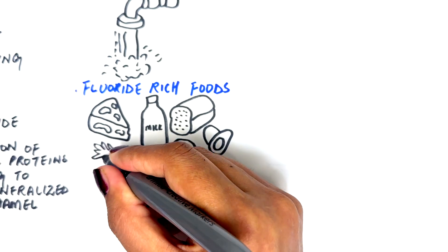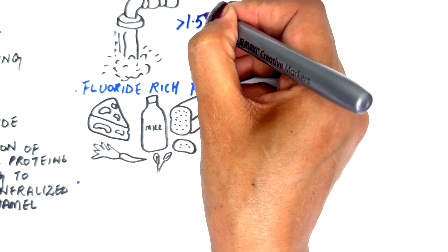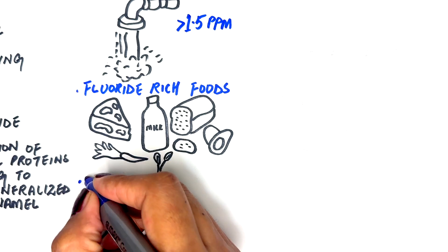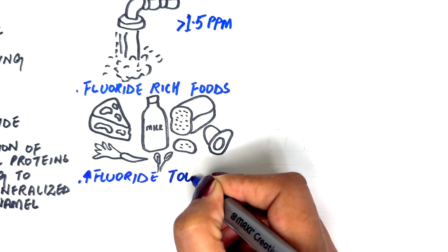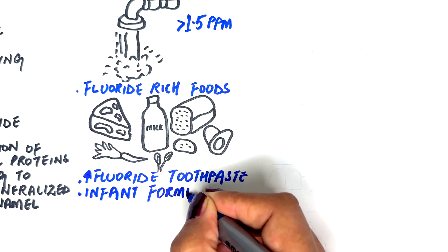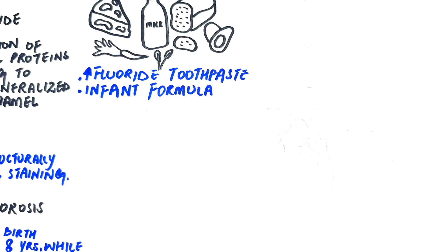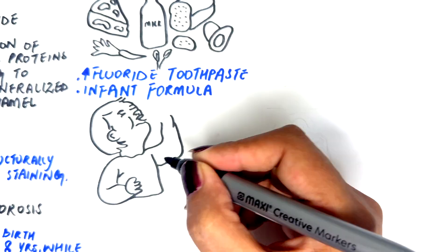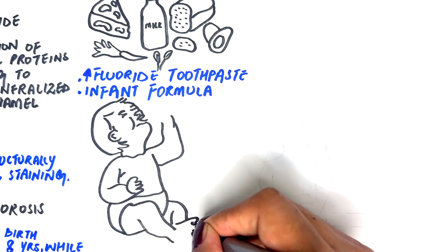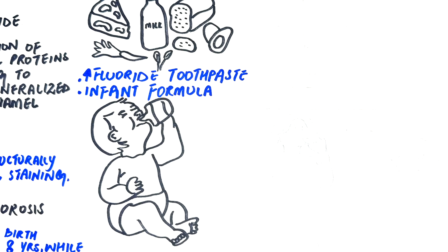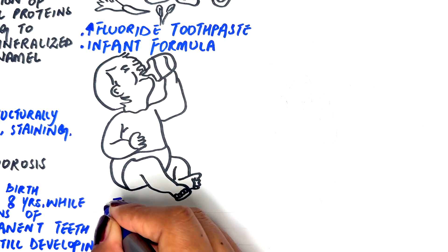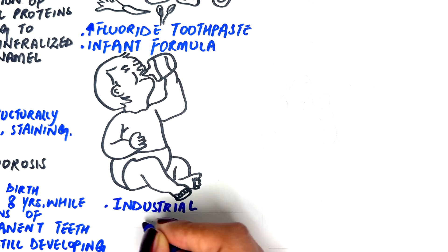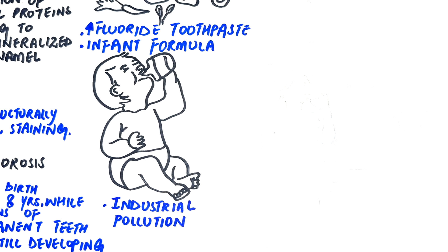Other sources include high-fluoride toothpaste if swallowed, especially by children; infant formula mixed with fluoridated water; and industrial pollution in certain regions. In high-exposure areas, excessive fluoride intake can lead to endemic fluorosis, affecting large populations.